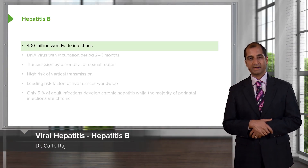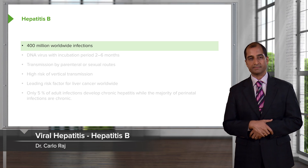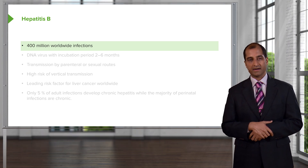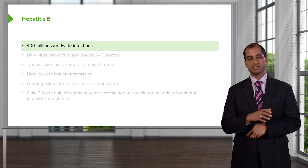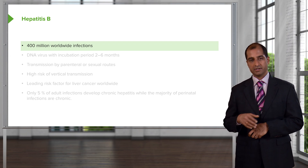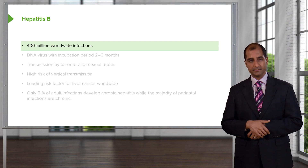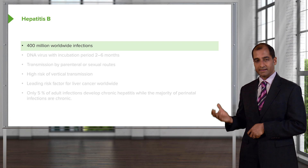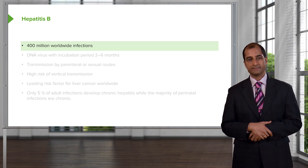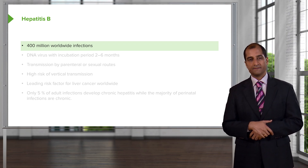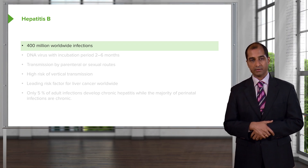Hepatitis B. Now we get into more chronic users and hepatitis B. Obviously, there is going to be vaccination involved. In immunology and microbiology, you've covered these topics further. What I'm going to provide is more of a clinical background for each one of these viral hepatitis. 400 million worldwide — you need to know this quite a bit.